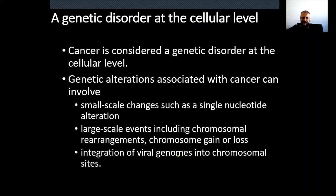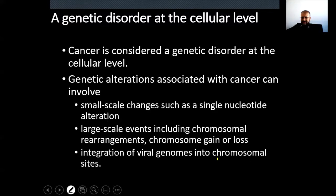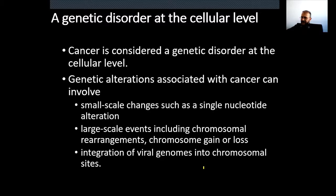Another genetic cause seen in cancer cases is the integration of viral genomes into chromosomal sites, which we will cover in the next lecture. So there are three kinds of genetic alterations seen in cancer cells: small-scale point mutations, large-scale chromosomal abnormalities, and integration of viral genomes into chromosomal sites. Some viruses integrate their genomes into the host cell genome, and if this happens close to a proto-oncogene, these viruses can activate it and convert it to an oncogene.